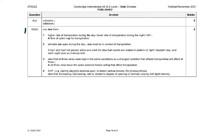From the mark scheme: higher rate of transpiration during the day, or lower rate of transpiration during the night. Stomata are open during the day. All three vines were kept in the same conditions, so any change in condition affecting transpiration will affect all three. During daylight, stomata are open to obtain carbon dioxide for photosynthesis. You only need to give two of these points.